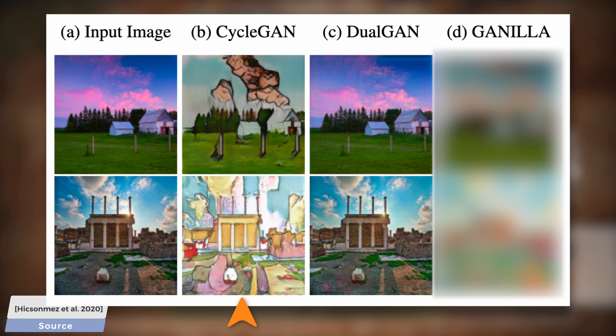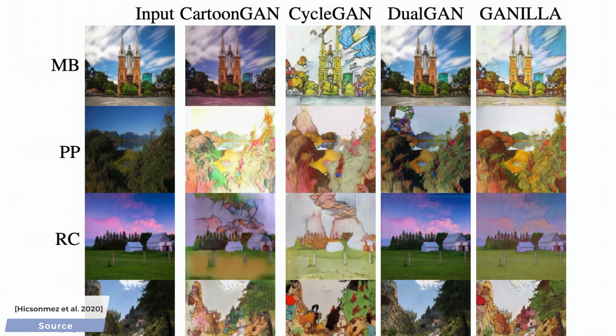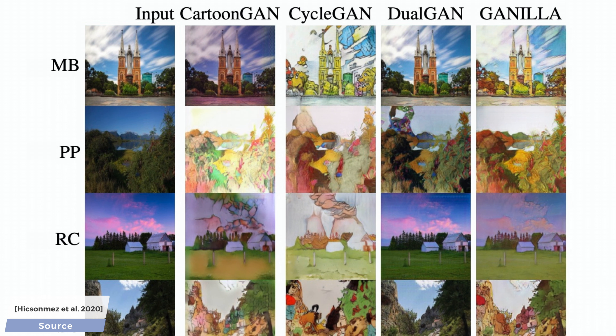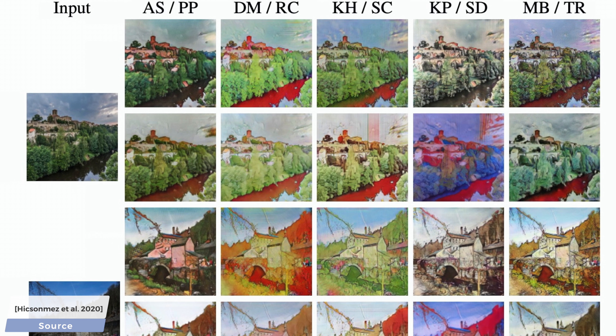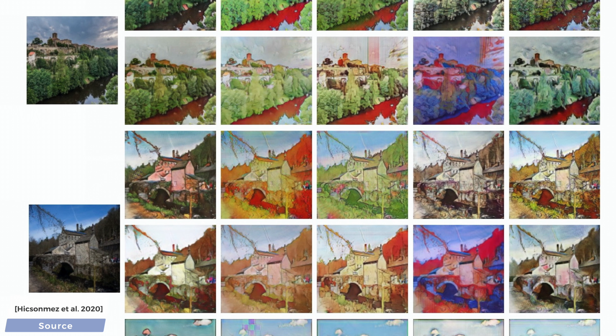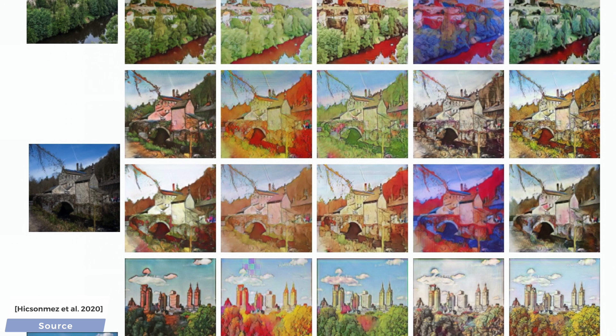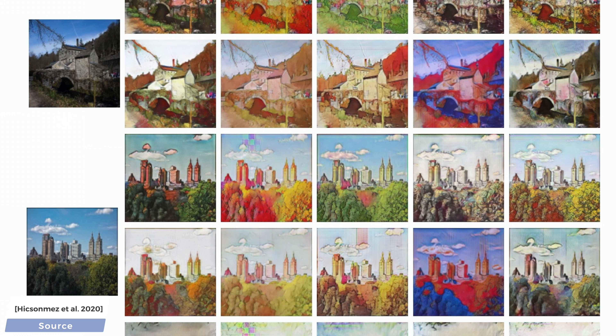Hold on to your papers, because this new technique called GANILLA offers us these results. The content is intact — checkmark — and the style goes through really well — checkmark. It preserves the content and transfers the style at the same time. One of the key reasons this happens is the usage of skip connections, which help preserve the content information as we travel deeper into the neural network.